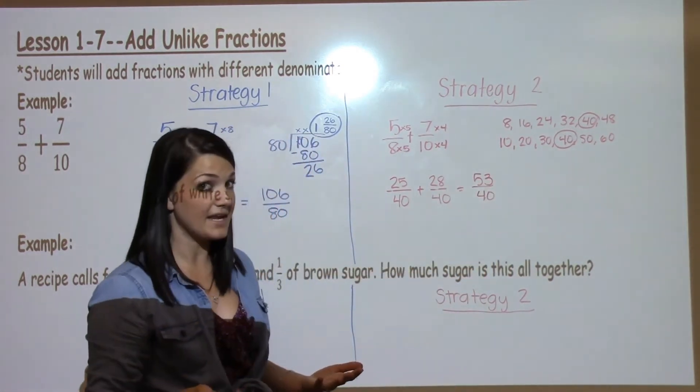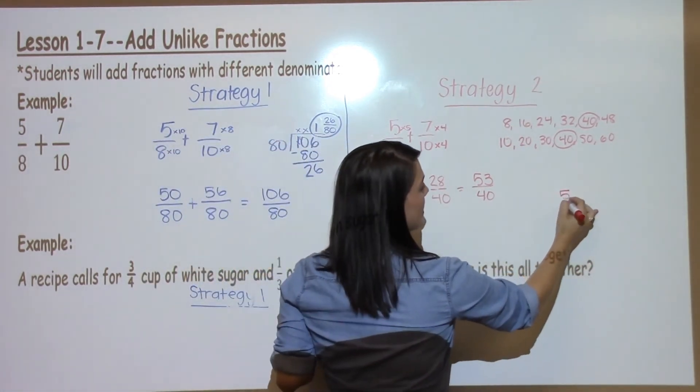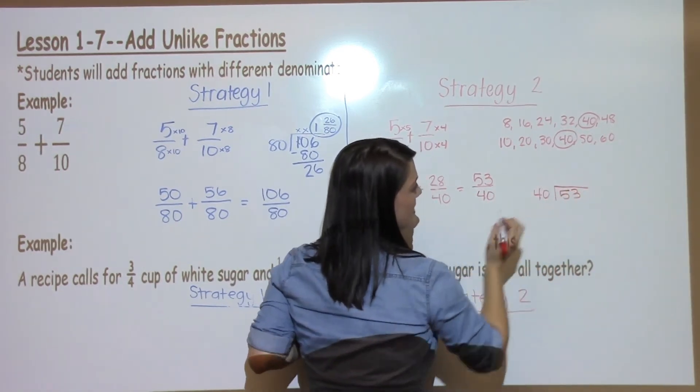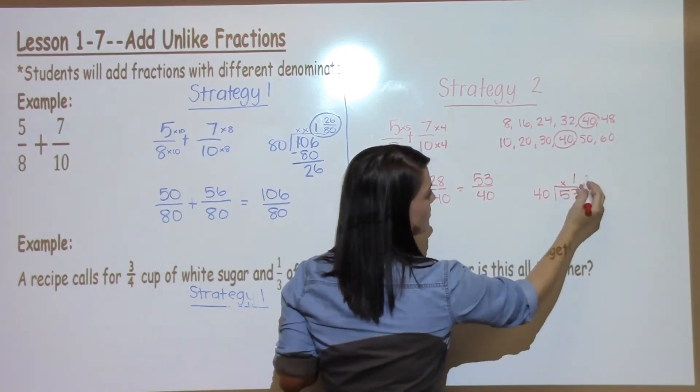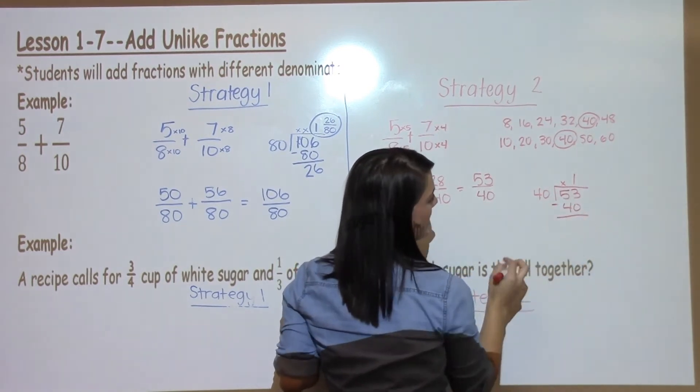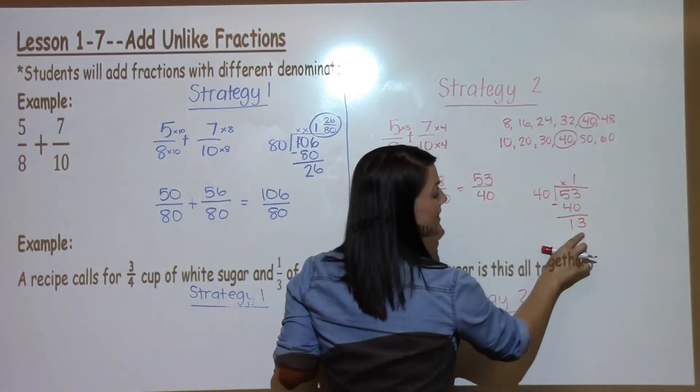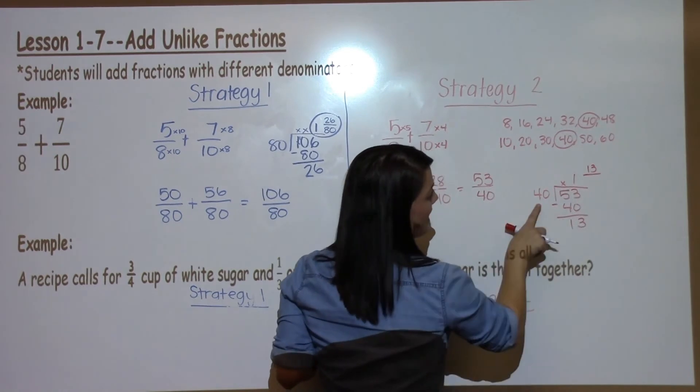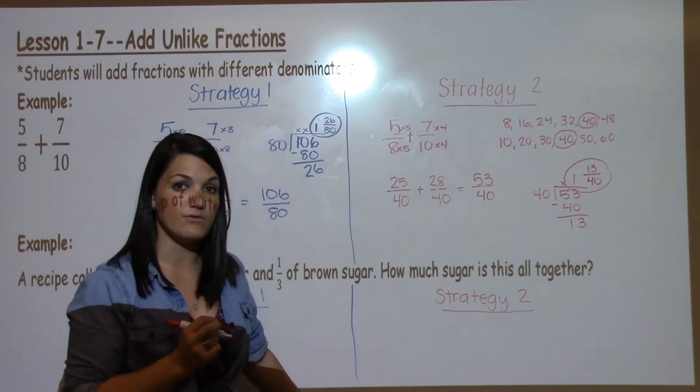This should look funny to you because it's an improper fraction. The top is bigger than the bottom. To solve that, I'm going to take the top number and divide it by the bottom number. 40 cannot go into 5, but it can go into 53 one time. 1 times 40 is 40. I subtract. 3 minus 0 is 3, 5 minus 4 is 1. There's nothing left to bring down, so 13 becomes the numerator, and 40 is the denominator for a final answer of 1 and 13/40.